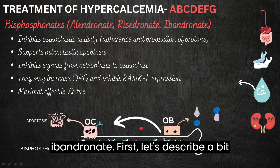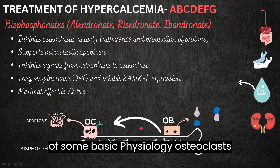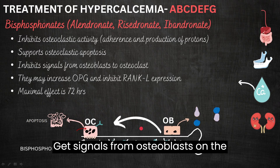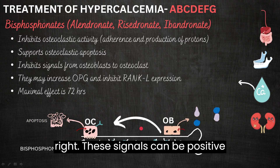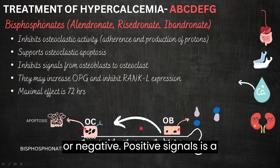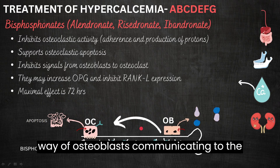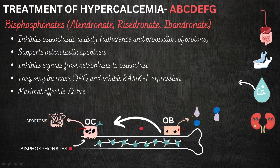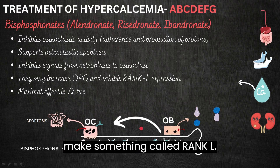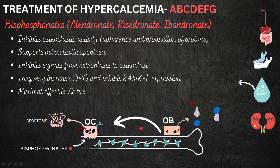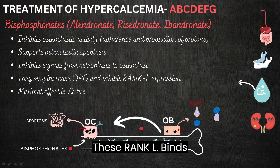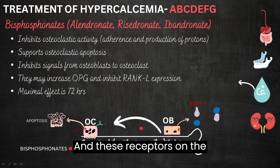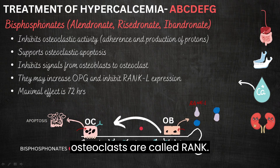Let's describe some basic physiology. Osteoclasts, depicted on the left, get signals from osteoblasts on the right. These signals can be positive or negative. Positive signals are a way of osteoblasts communicating to osteoclasts to start removing the bone. Positive signals start when osteoblasts make something called RANK-L. This RANK-L binds to precursor osteoclastic cells, and these receptors on the osteoclasts are called RANK.